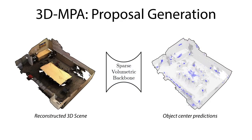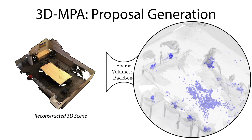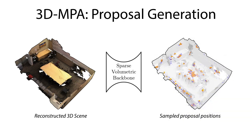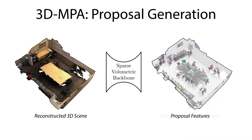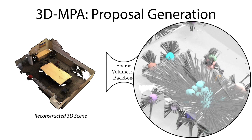From an input 3D scene, we leverage a sparse volumetric backbone to jointly learn meaningful semantic features and object centers. We obtain proposal positions by sampling from the predicted object centers. Proposal features are learned by grouping point features voting for the same object center.